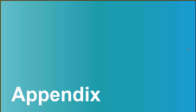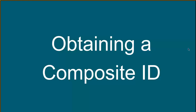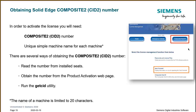Now let's talk about how you obtain the Composite ID number, because in addition to your WebKey account, you need this piece of information to successfully log in to the license management website. There are three different ways to access the Composite CID number. You can read it from installed seats if you already have seats installed within your company. You can obtain it from the product activation web page. Or you can run the executable getcid.exe utility, which is located in the program directory under your Solid Edge installation.